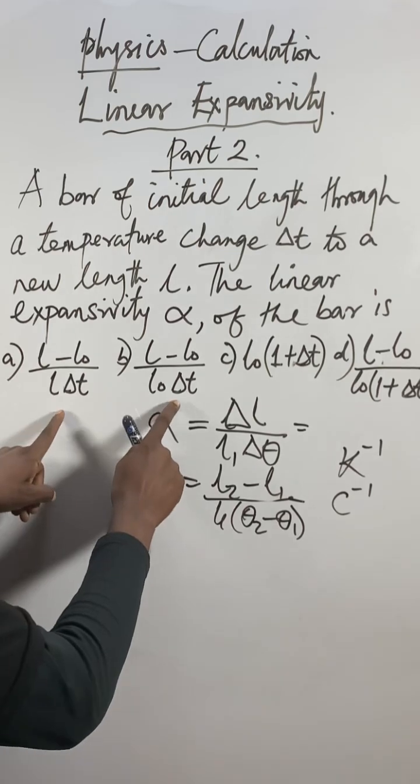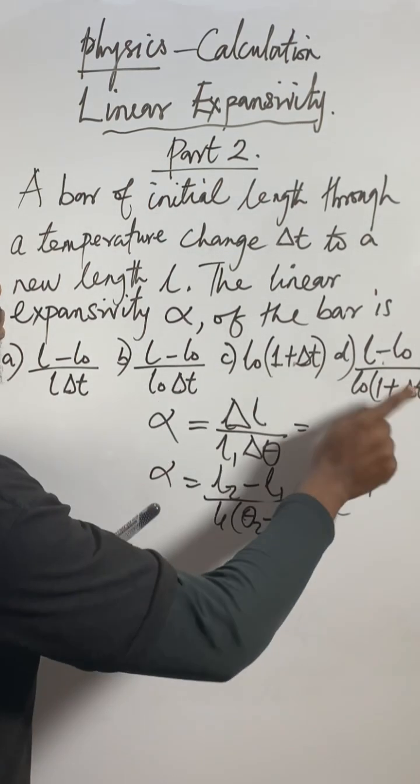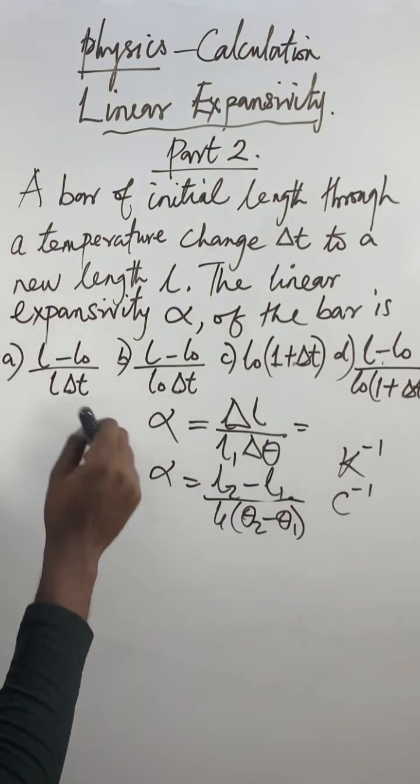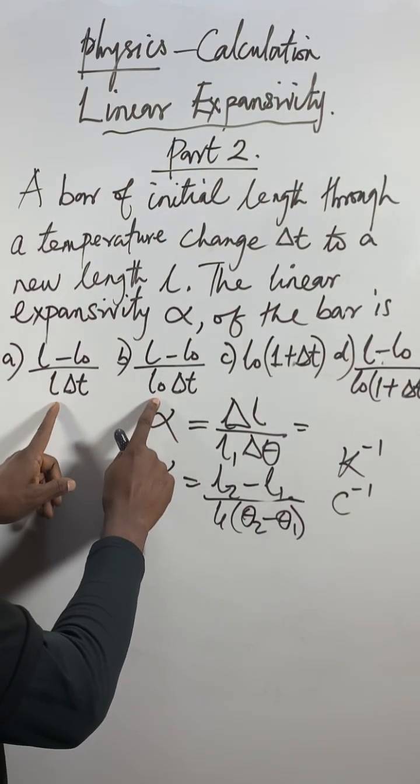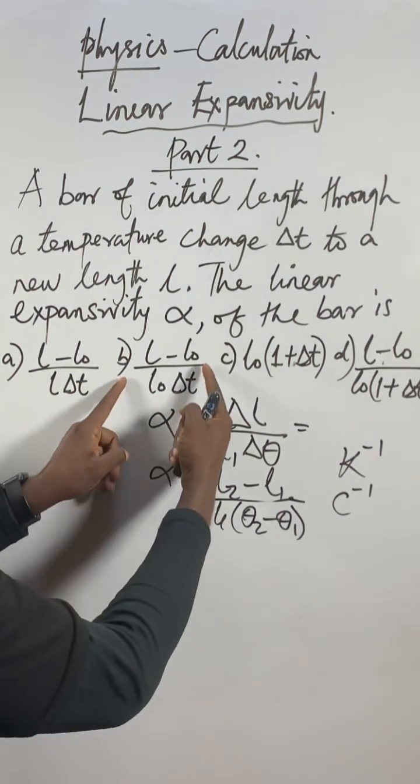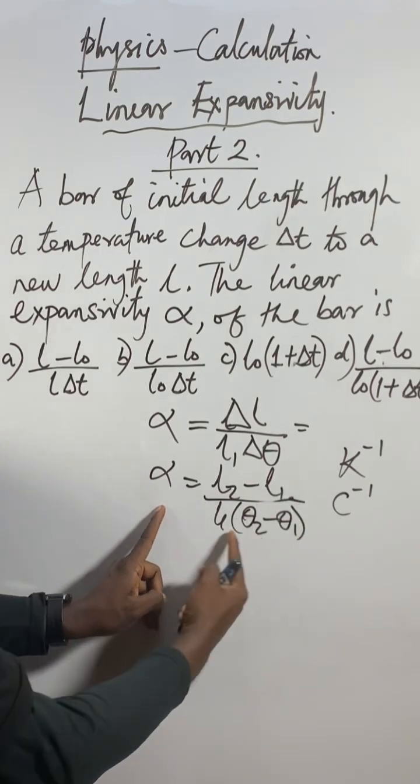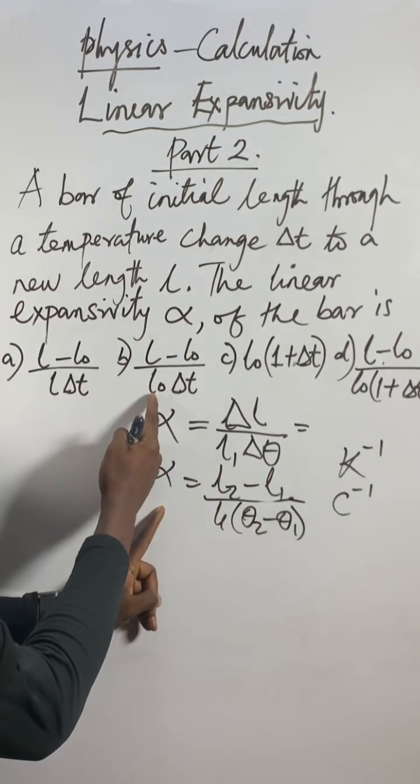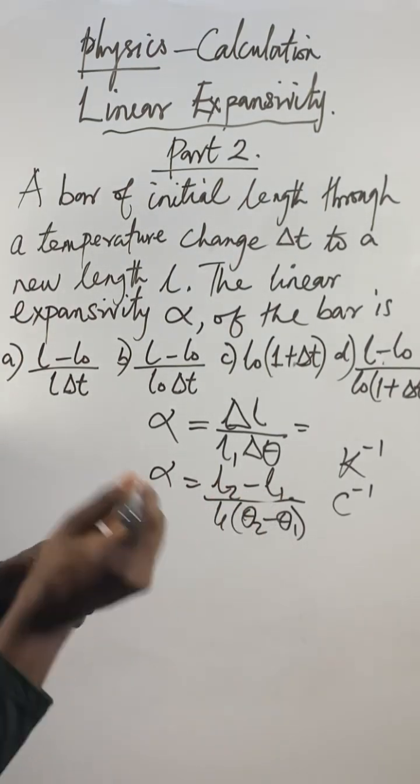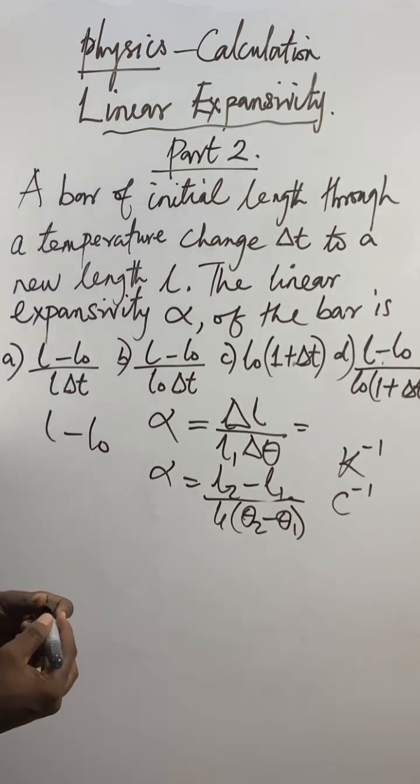If you look at the options, these two of them will confuse you already. This one and this one look similar but they don't follow the same pattern. If you compare this one to what I showed you, notice that L₁ should be here, so L₀ is supposed to come here. Remember I chose to use L₂ minus L₁, or you can use L minus L₀ - they're the same thing.